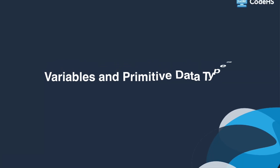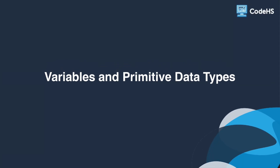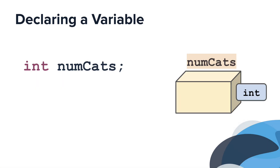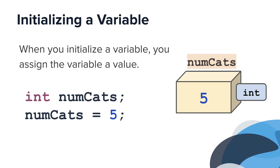In this video, we'll continue learning about variables and primitive data types. Now that there is a variable that is ready to store an integer, the next step is to assign it a value. When you initialize a variable, you assign the variable a value.